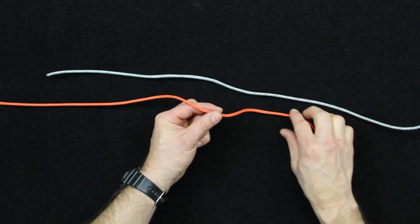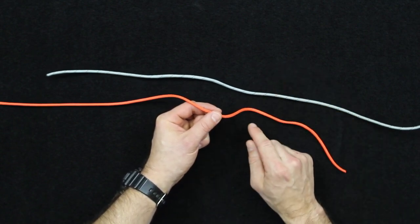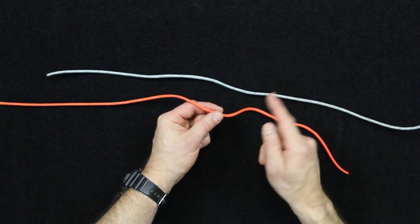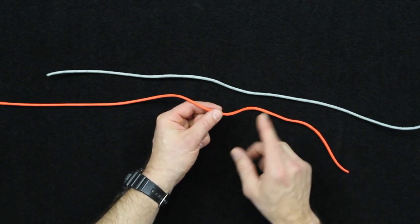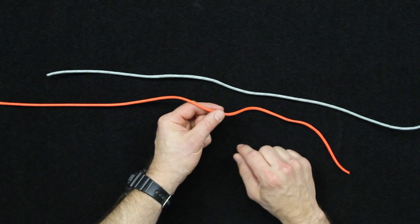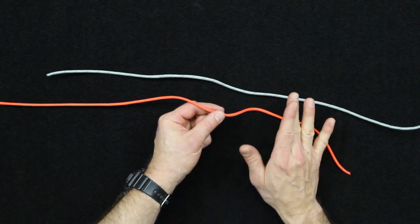Okay, so for the blood knot, I'm using two types of paracord here to show the difference in monofilament line that you would use if you were joining monofilament together. So this is typically used to join two similar size types of monofilament together. If you were doing something like fly fishing,